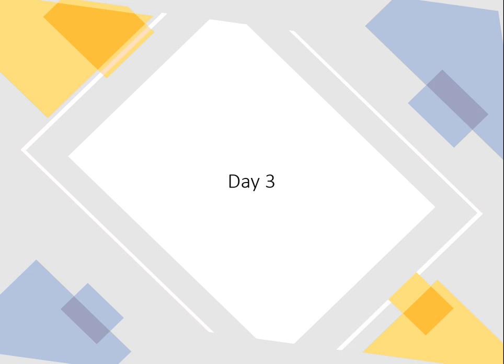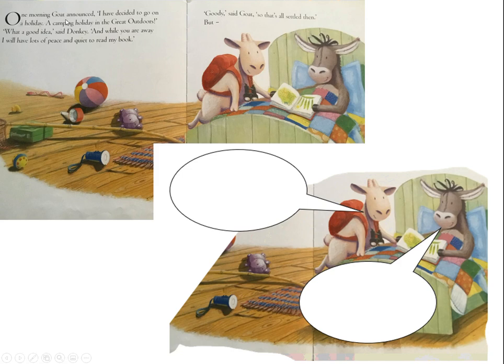So: 'One morning goat announced, I have decided to go on a holiday, a camping holiday in the great outdoors.' Tell your grown-up, or point to the screen, to the part of the story that is being spoken — what goat announces. Goat is announcing this section — this is the part that he's speaking.